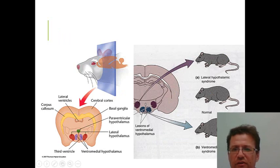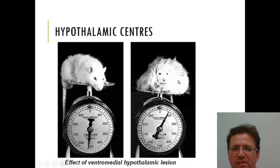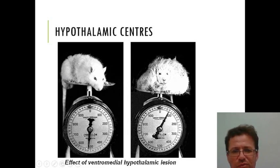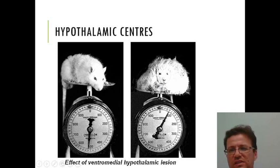A diagram shows the ventromedial areas promoting satiety — lesion them and you no longer feel full, you overeat and get a large rat. The lateral hypothalamus promotes feeding — lesion it and you get a small rat. This led to the classic image found in many textbooks of a rodent with a ventromedial hypothalamic lesion that appears more than double the normal weight — over one kilogram — showing profound obesity triggered because the region responsible for signaling fullness and stopping eating has been damaged.